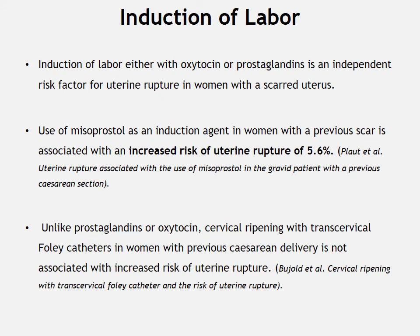Epidural anesthesia for labor and adequate pain relief should be encouraged. Induction of labor with oxytocin or prostaglandins is an independent risk factor of uterine rupture in women with a scarred uterus. Use of misoprostol as an induction agent carries a uterine rupture risk of 5.6%. Unlike prostaglandins or oxytocin, cervical ripening with a transcervical Foley catheter in women with a previous cesarean delivery is not associated with increased risk of uterine rupture.